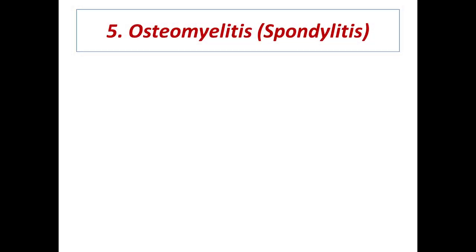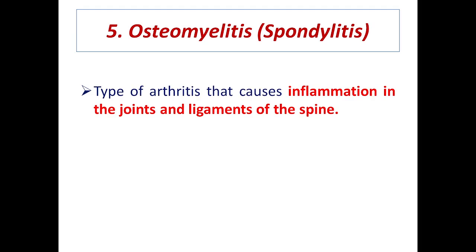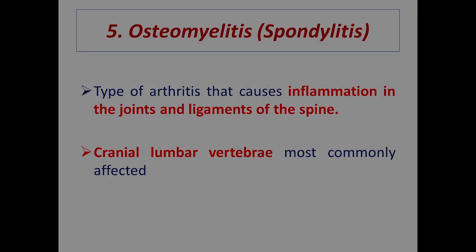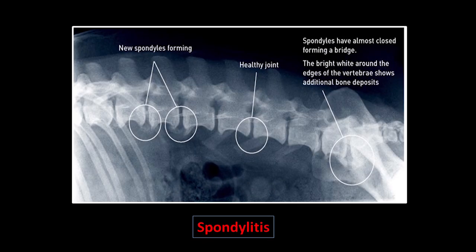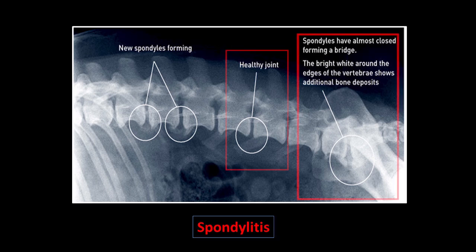Spondylitis, or osteomyelitis of the vertebrae, is a type of arthritis that causes inflammation in the joints and ligaments of the spine. The most common site is the cranial lumbar vertebrae. In this x-ray, new spondylitis has developed at the L2 and L3 intervertebral space. Sclerosis is very developed, showing clear signs of inflammation — this inflammation is called spondylitis.